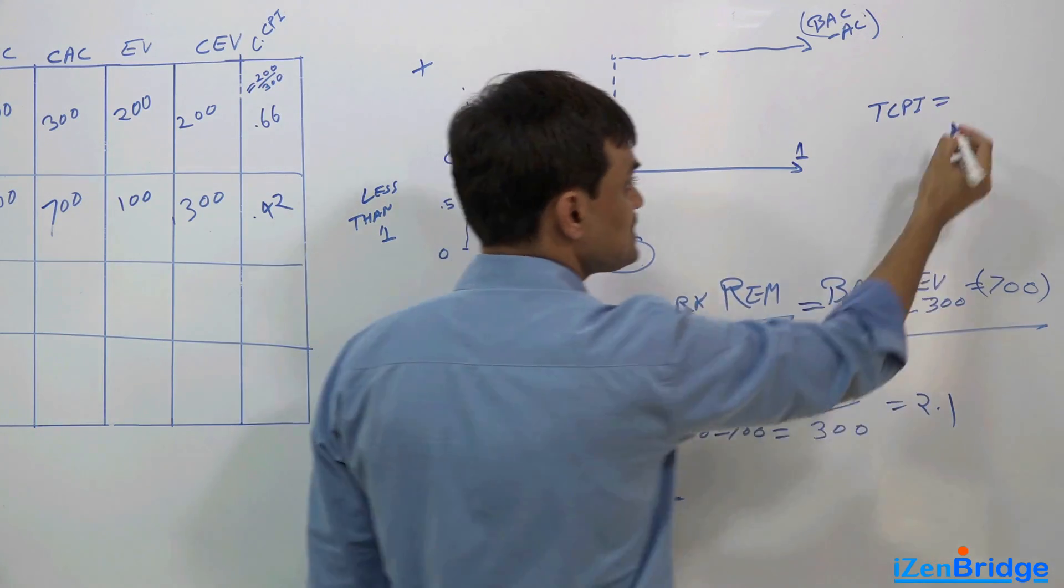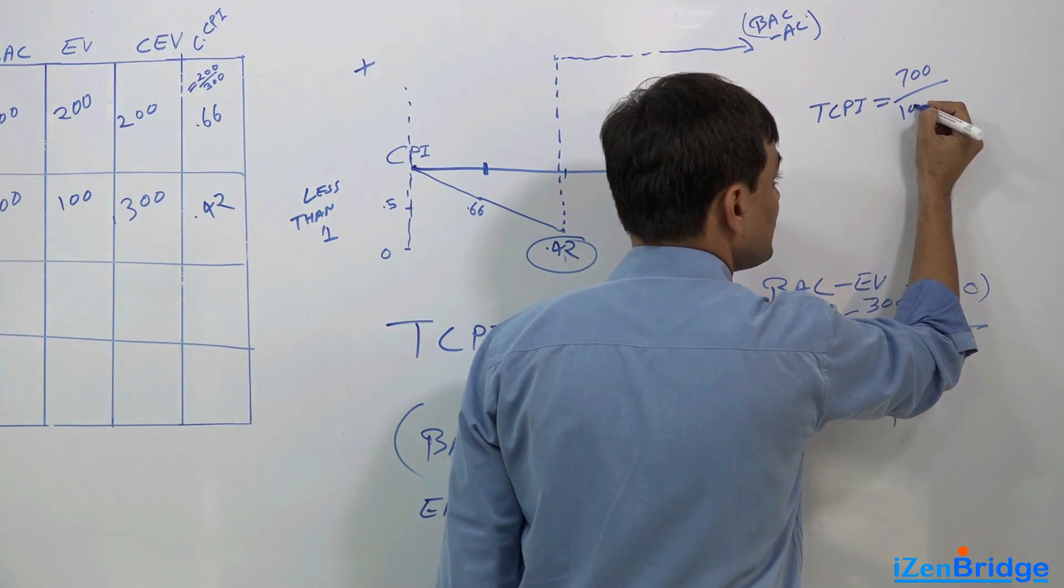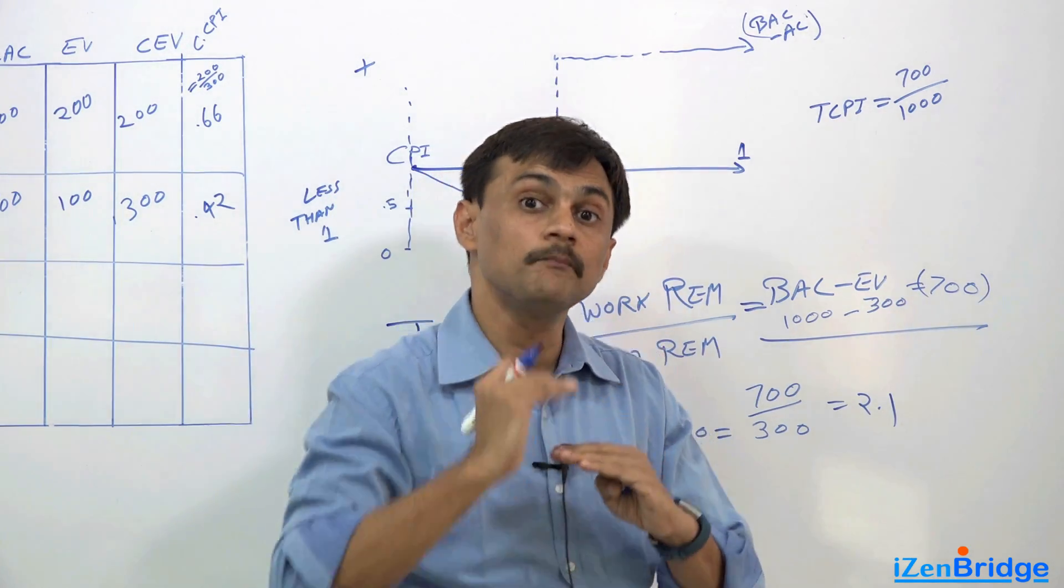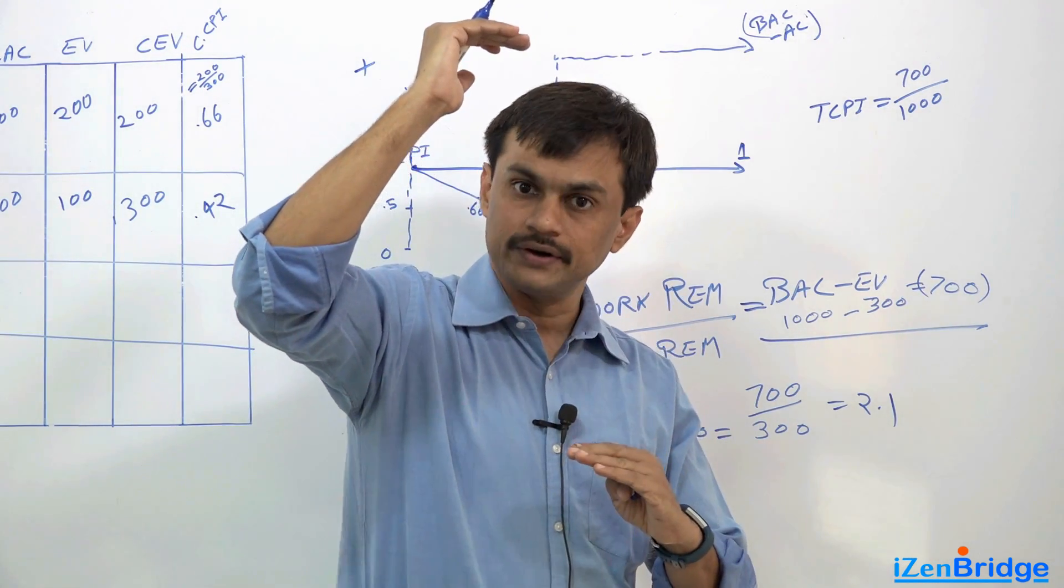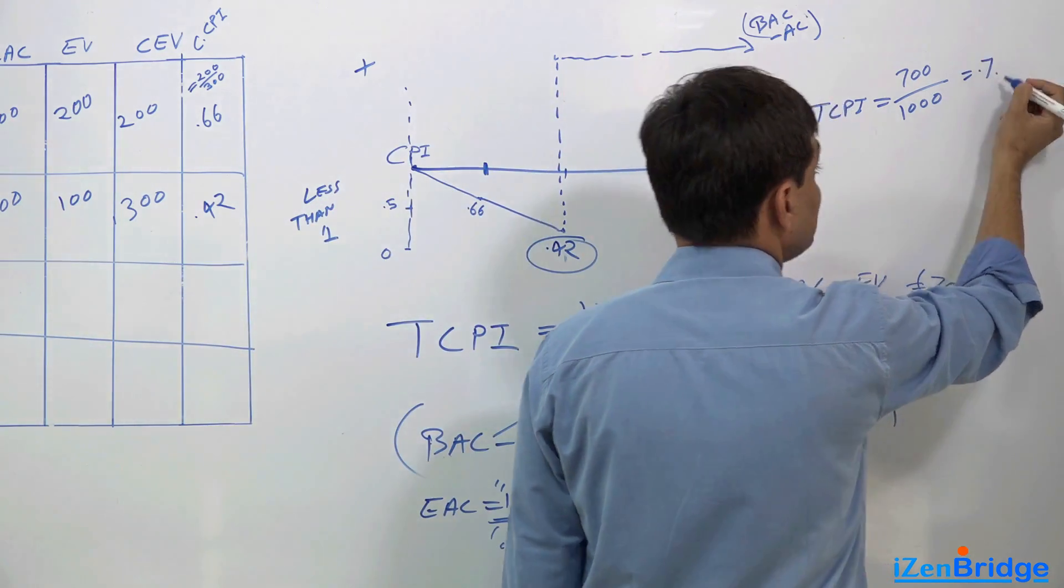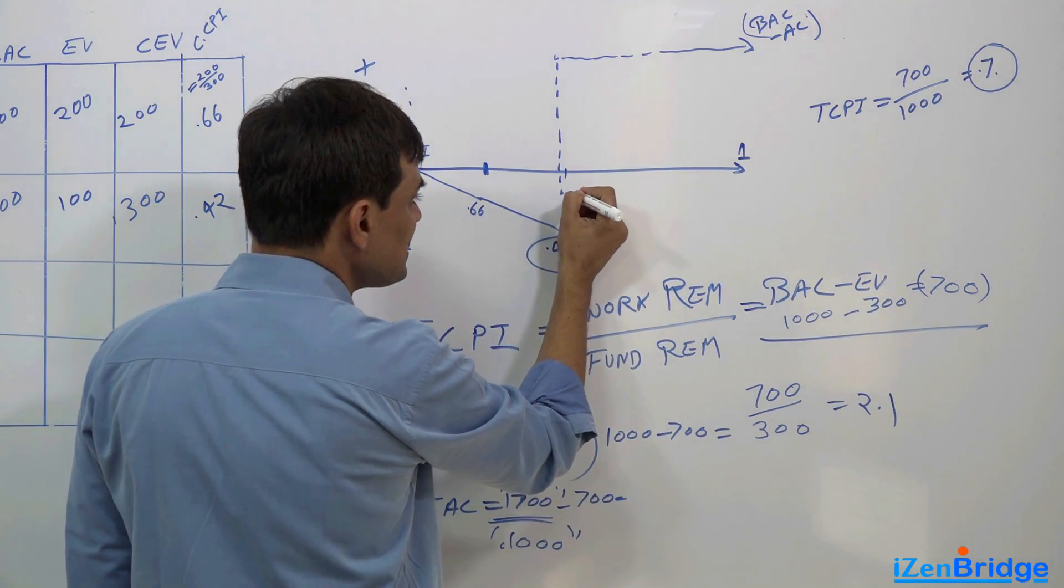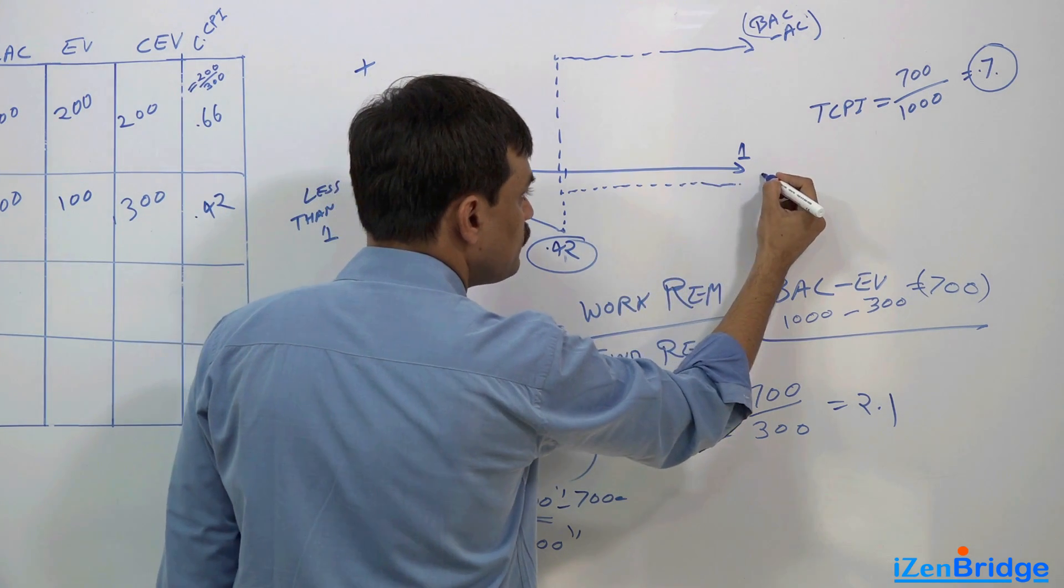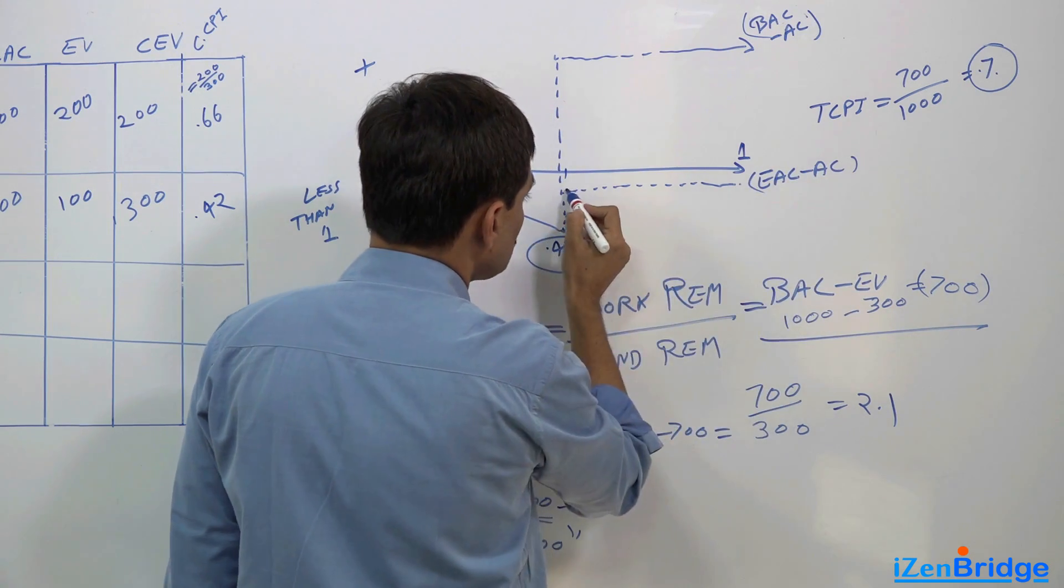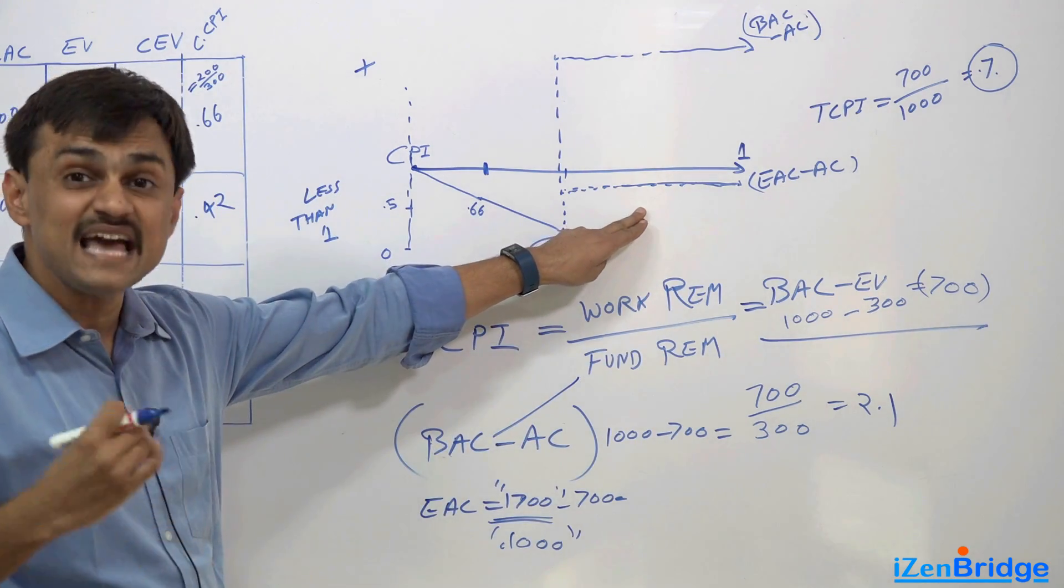Then my new TCPI by using this particular formula will become - my work remaining is $700 only, but company has given me more money to finish it. My fund remaining is $1000 now, because my initial budget which was $1000 got pumped up by $700. And in this case I'm thinking of achieving 0.7 cost performance index. In that case you are somewhere here. So even if you remain with 0.7, you still achieve your project goal in the remaining fund.